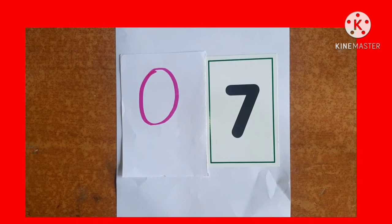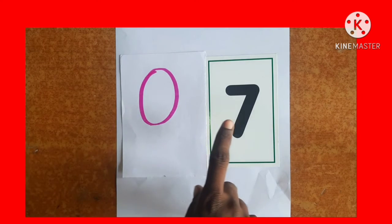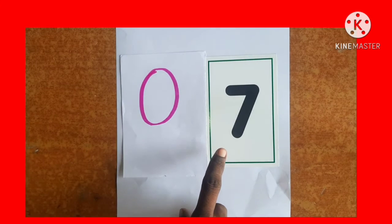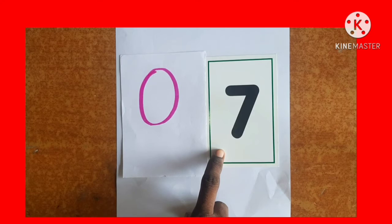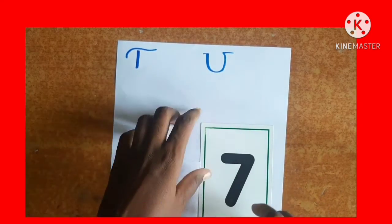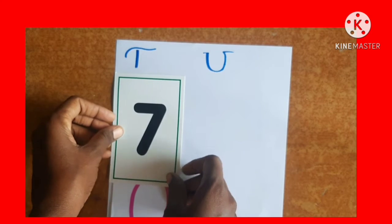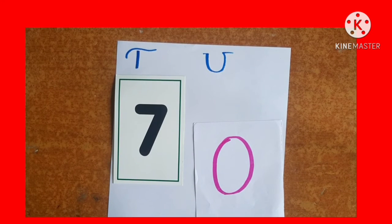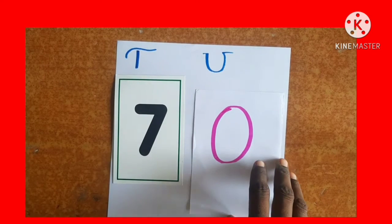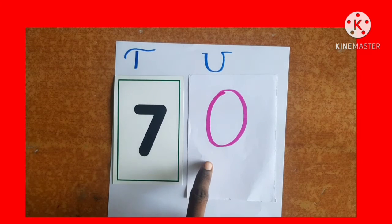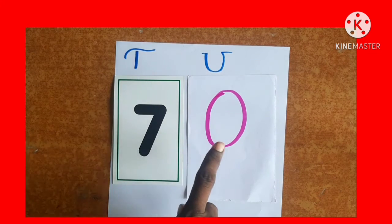Which is the biggest 2-digit number that can be formed using 0 and 7? Identify the bigger number out of 0 and 7 and place it in the tens place in the place value chart. So 7 is the biggest number — place it in tens place. Then place the remaining number, 0, in the units place. So 70 is the biggest possible 2-digit number that can be formed using 0 and 7.